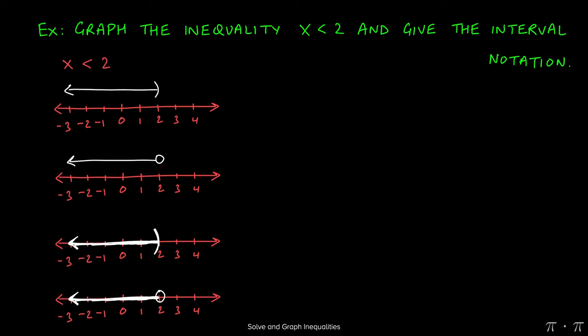To confirm that our arrow is pointing in the right direction, we can choose a test point. Let's say we chose x equals 0 and plug it into the inequality x is less than 2. This is quite a simple check because 0 is indeed less than 2, which means it is a true statement.